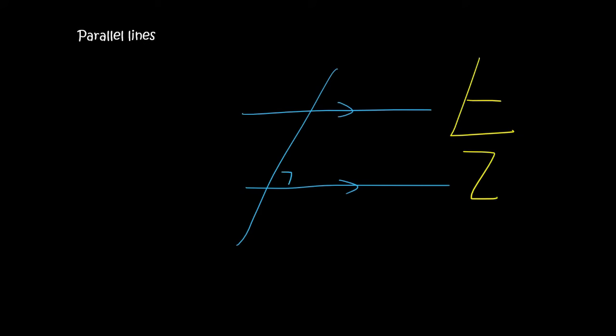Now if this one's 70, and we said that this one over here is the same because of the F, then if we look at this point over here, that is a straight line. So that means these two angles must be 180, which means that this one is 110.